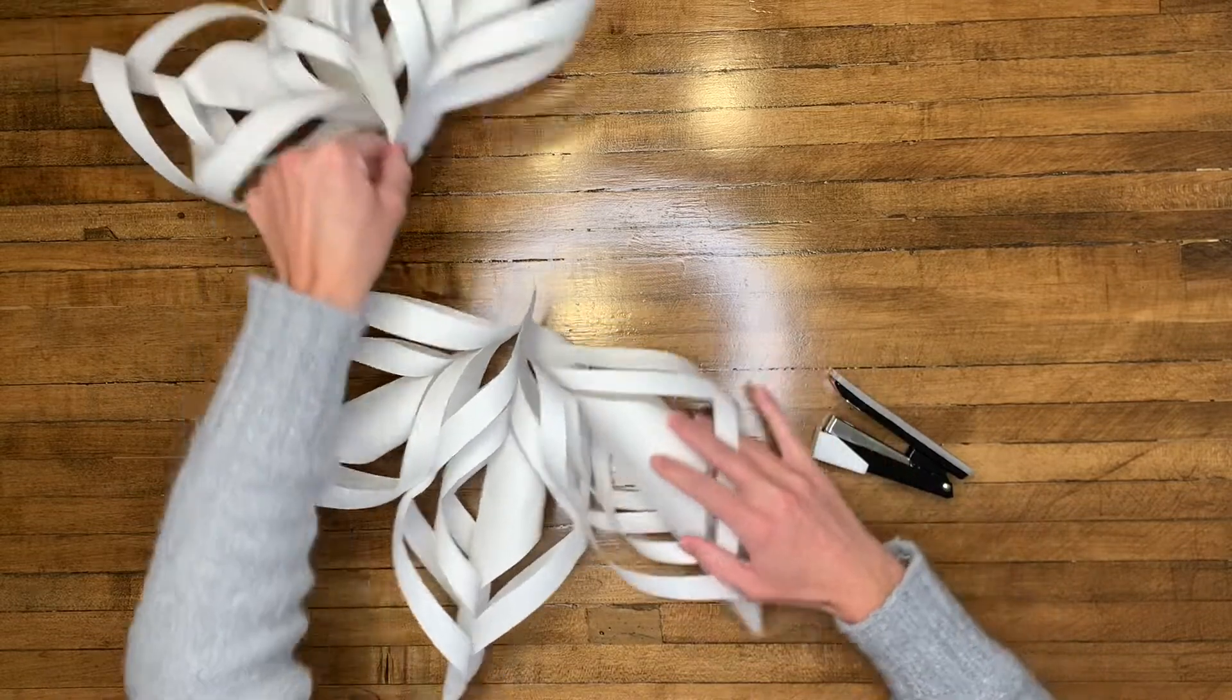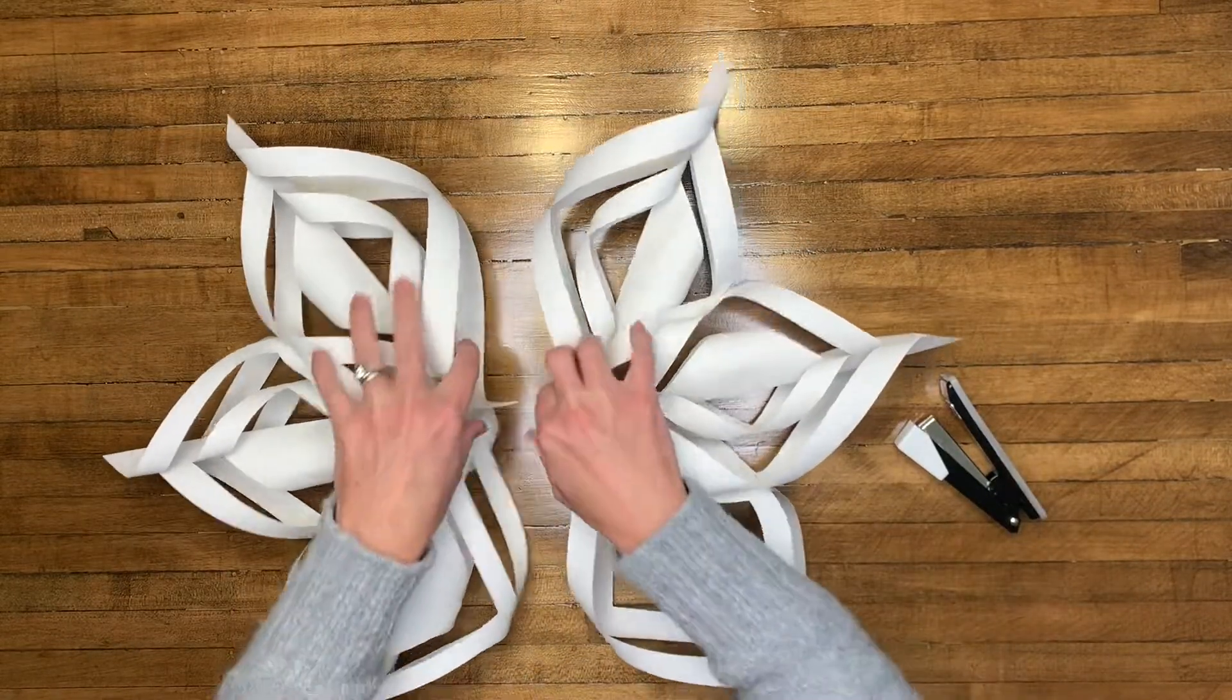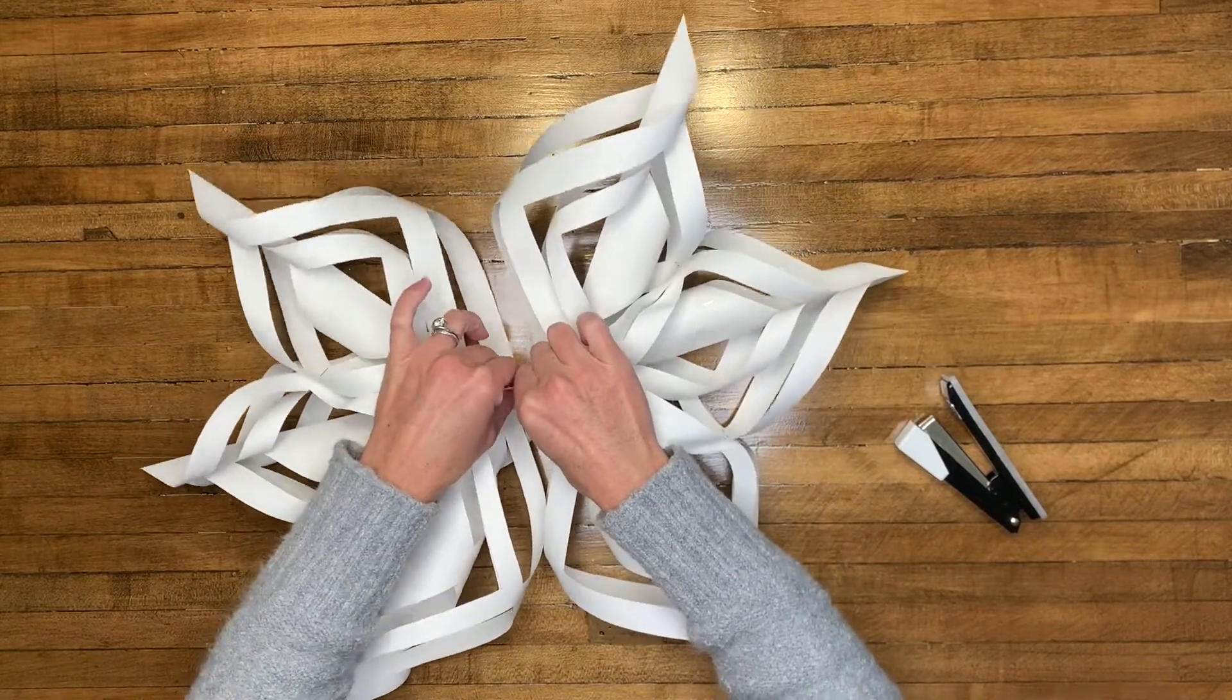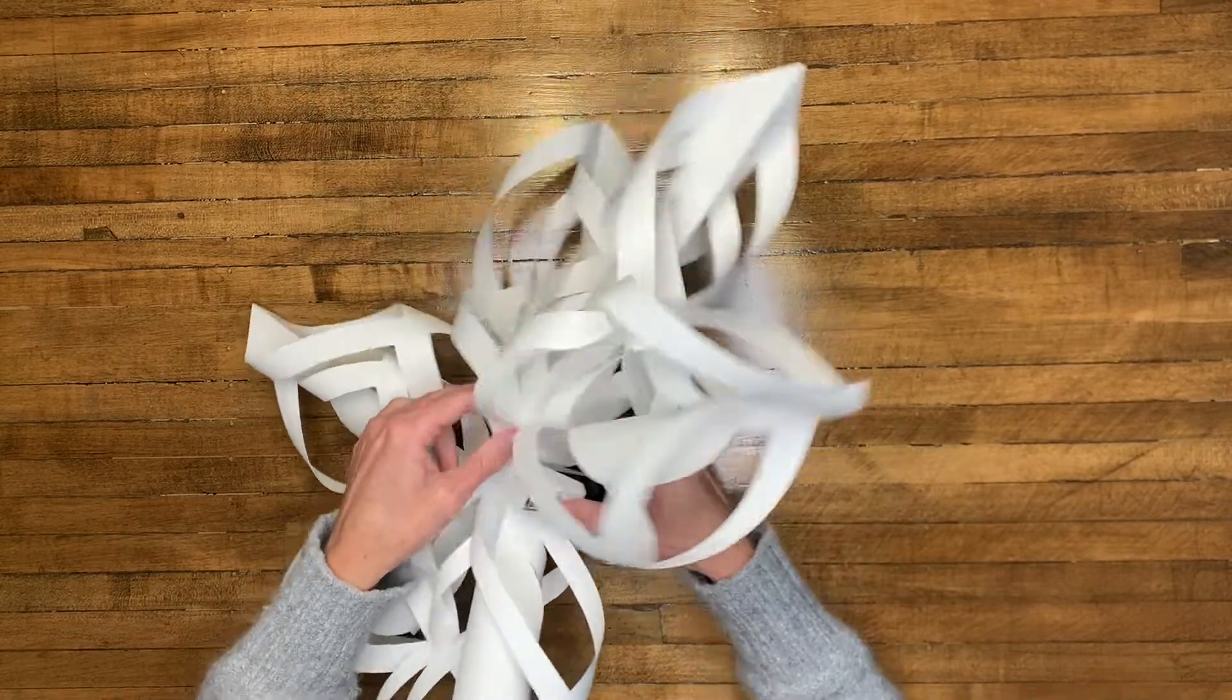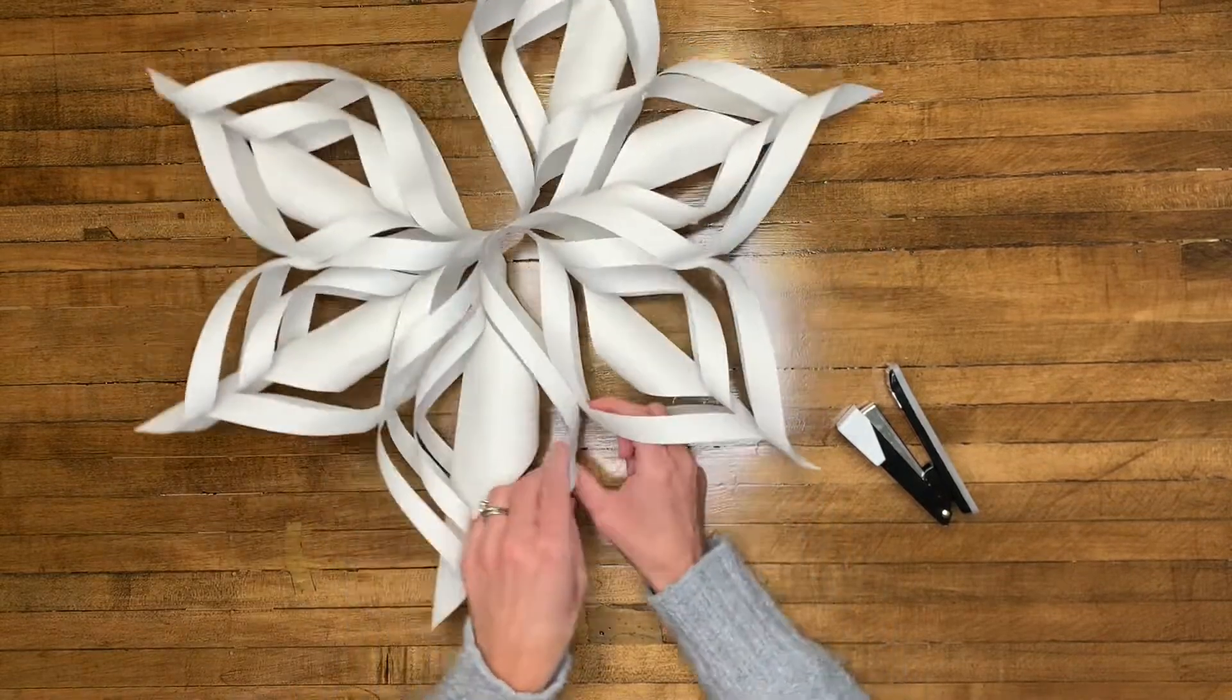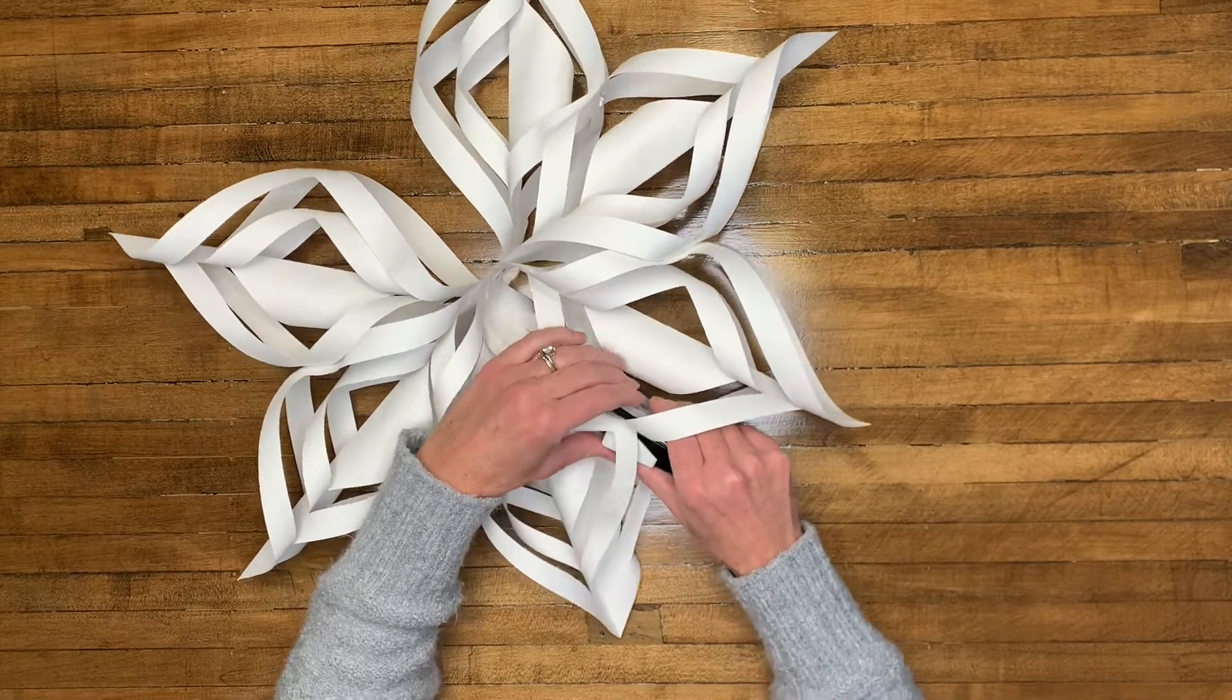So now that you have both halves done, you're going to take the middle pieces of each half, overlap them together and then use your stapler to staple them together. I used two staples here to make it really strong and then take those outer loops of each piece of the snowflake and connect with your stapler.